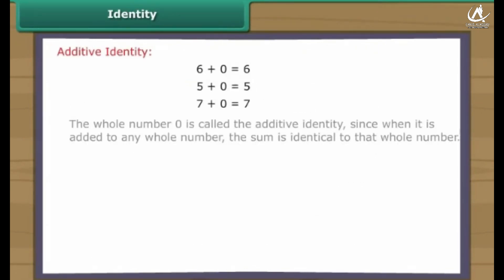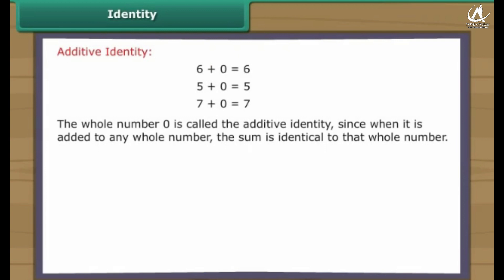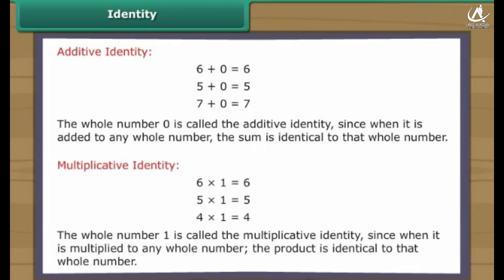The whole number zero is called the additive identity, since when it is added to any whole number the sum is identical to that whole number. The whole number one is called the multiplicative identity, since when it is multiplied by any whole number the product is identical to that whole number.